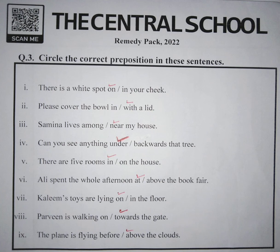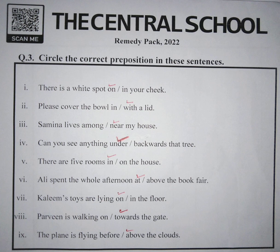Our seventh sentence is: the toys are lying on slash in the floor. The correct preposition is 'on' as it is locating the place and showing that the toys are on the floor. Our eighth sentence is: Pervane is walking on slash towards the gate.